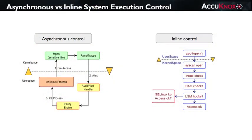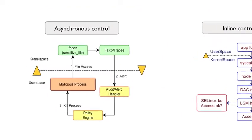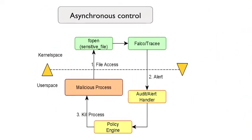To explain how KubeArmor differs from existing eBPF-enabled policy engines, such as Falco and Tracy, let's revisit the notion of asynchronous policy control and compare it to KubeArmor, which in contrast implements inline policy control. For Falco and Tracy, an eBPF service operating in kernel space can report an alert to a user-space service, which can then take action. In this example, Falco and Tracy can detect an access or perhaps a deletion of a sensitive file. This alert can then be immediately processed by a user-space policy engine, which could then terminate the offending process.